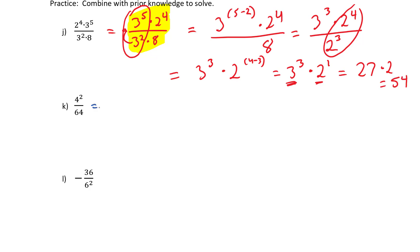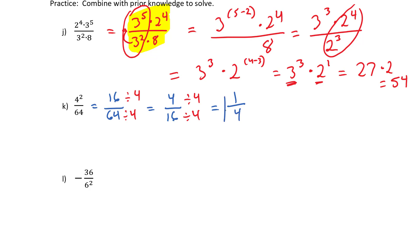Next: 4 squared divided by 64. Start by squaring the 4: 4 times 4 is 16. Take a 4 out of both: 16 over 64 becomes 4 over 16, then divide by another 4 to get 1 over 4. You can see we're building on prior knowledge — we learned about exponents, and now we're learning about fractions and simplification, and you need to understand all three concepts to solve these problems.